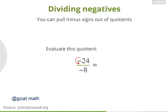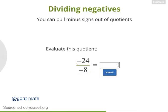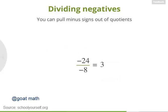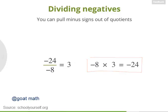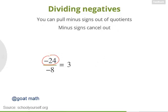Try dividing one negative number by another negative number. What's negative 24 divided by negative 8? In other words, what can you multiply by negative 8 to get negative 24? Negative 24 divided by negative 8 equals positive 3, because negative 8 times 3 equals negative 24. In general, when you divide one negative by another negative, the minus signs cancel out. So negative 24 over negative 8 is the same as 24 over 8, without the minus signs.